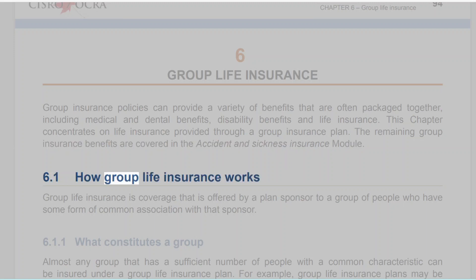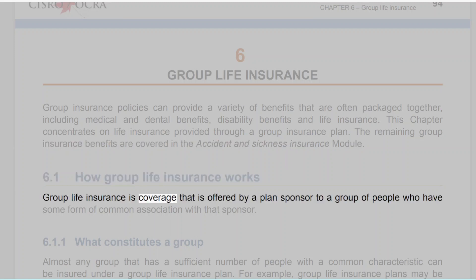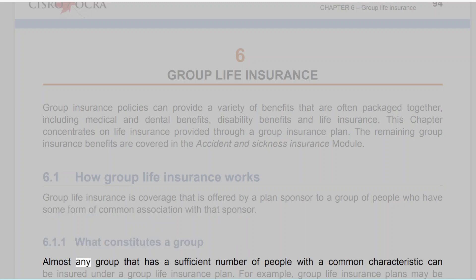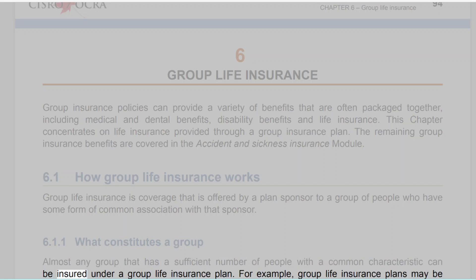6.1 How Group Life Insurance Works. Group life insurance is coverage that is offered by a plan sponsor to a group of people who have some form of common association with that sponsor. Almost any group that has a sufficient number of people with a common characteristic can be insured under a group life insurance plan.